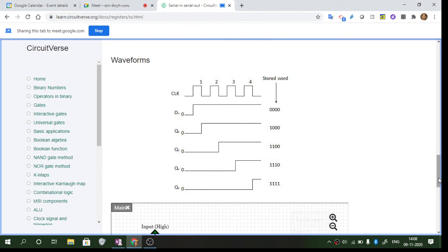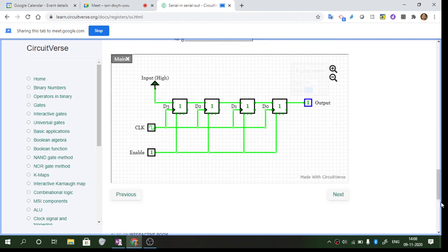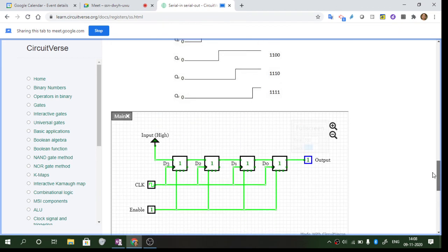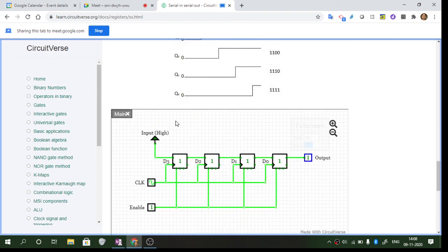This is how you can see the circuit operation. The high one goes like this, and finally the output is 1-1-1-1 at the end of the fourth clock pulse. You can count and see. This is how we will be discussing.